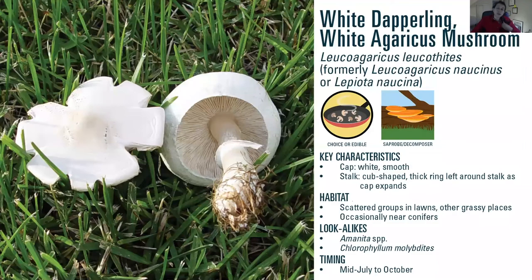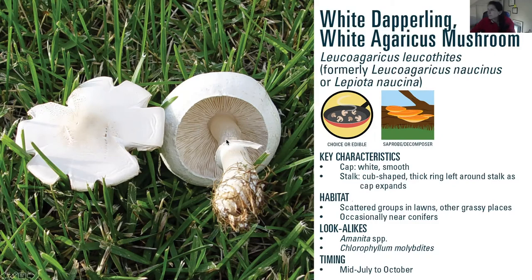This is one considered edible, but look at how much this white mushroom looks like some of the ones I just showed you. This is the white dappling or white agaricus mushroom, Leucoagaricus leucothites. The cap is white and very smooth, the stalk is club-shaped, and has a thick ring. You'll find this in lawns and grassy areas, especially near conifers. Lookalikes include Amanita and Chlorophyllum molybdites, so be very, very careful. If you're not sure this is the Leucoagaricus leucothites, leave it behind — it's not worth the chance with so many dangerous white mushroom lookalikes.